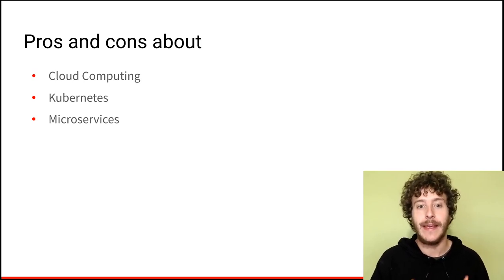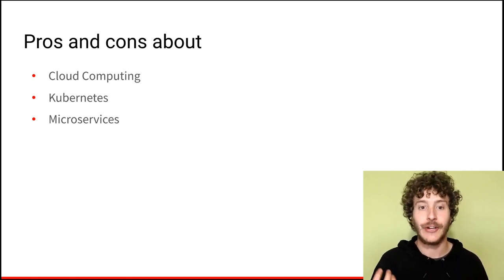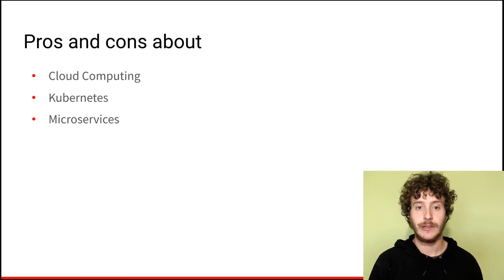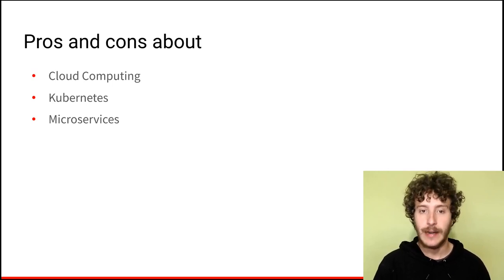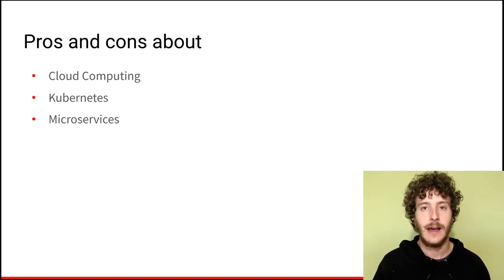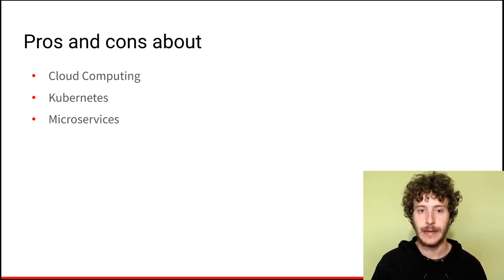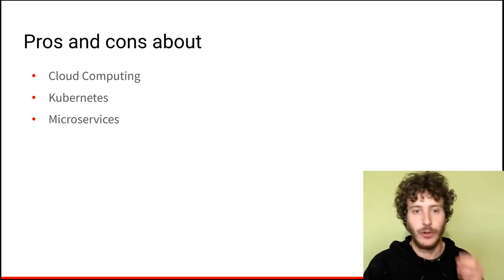Cloud computing and Kubernetes makes distribution way simpler and more affordable, and that increases complexity. Microservices is a way you write applications to make them scale — not only the application itself but also the teams that work on your product. You can have smaller teams working on a segmented piece of your business, and you can scale them up and down as you wish.